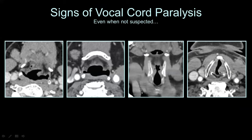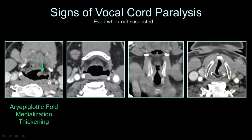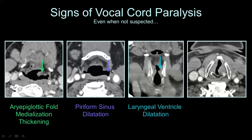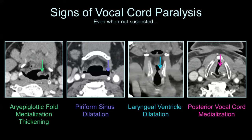Signs of vocal cord paralysis are always important to look for — you can pick it up even when not suspected. Here's a patient with several axial CT images and a coronal image. First sign: medialization and thickening of the left aryepiglottic fold. Second: the left piriform sinus is dilated compared to the right. On the coronal image, the ipsilateral laryngeal ventricle is also dilated. And on another axial image, there's posterior medial rotation of that left vocal fold — the so-called sail sign. These are the four signs of vocal cord paralysis to look for.